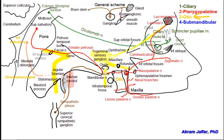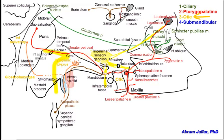As the glossopharyngeal nerve passes through the jugular foramen, it gives rise to a tympanic branch that passes upwards through a small foramen in the bone between the carotid canal and the jugular foramen, and enters the petrous temporal bone. This nerve, called the tympanic branch or Jacobson's nerve, forms a plexus within the tympanum — the middle ear cavity — called the tympanic plexus, which is concerned with sensory innervation of the tympanic cavity. Some fibers here are preganglionic parasympathetic fibers from the inferior salivatory nucleus, which leave the tympanic plexus through the lesser petrosal nerve.